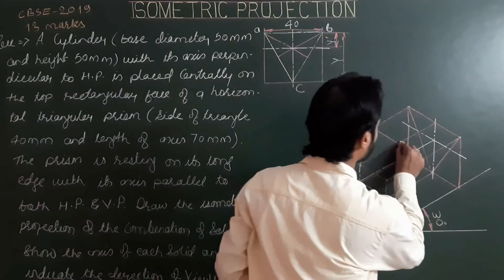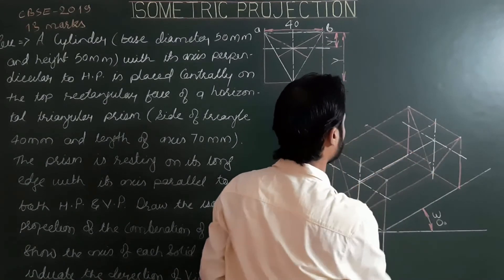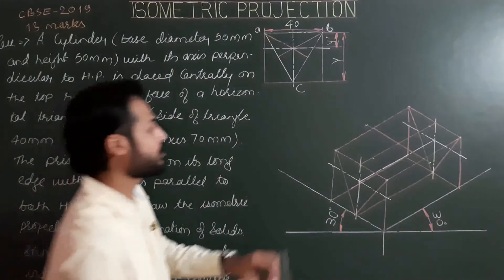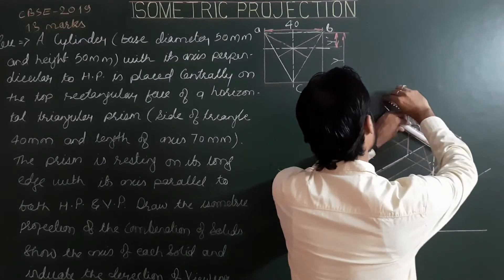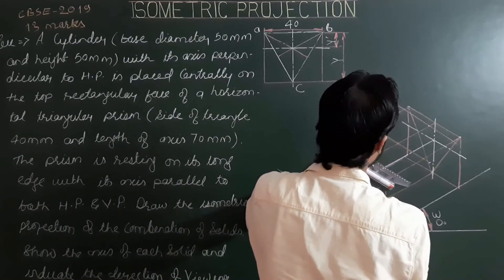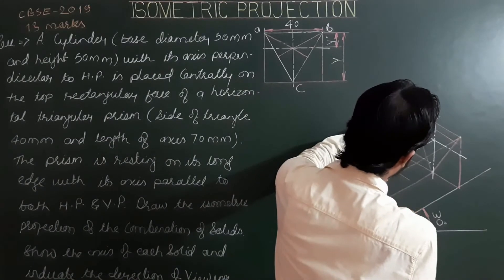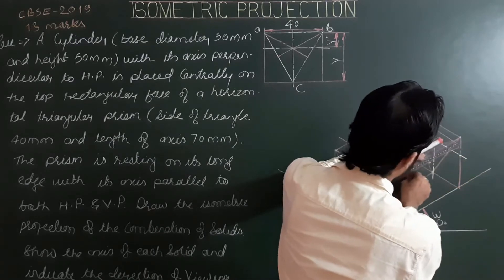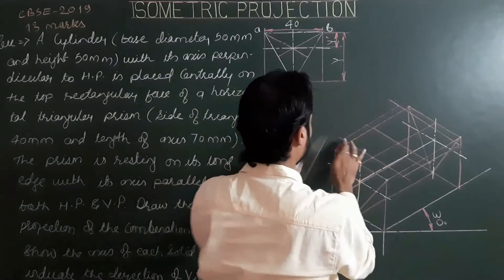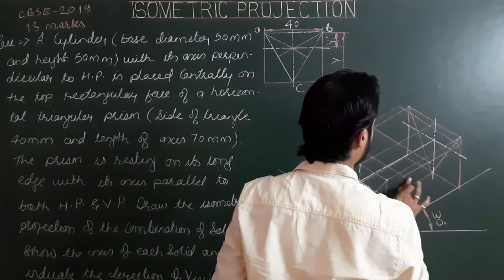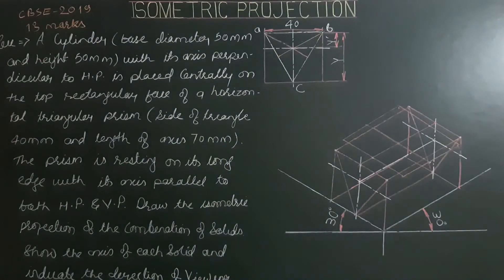Draw lines parallel to the first and second isometric axes from these points on the center lines to get the helping square. This is the helping square for the bottom circular base of the cylinder.